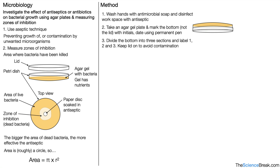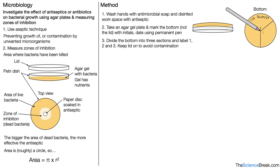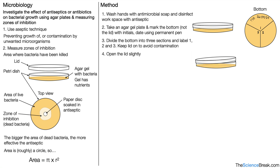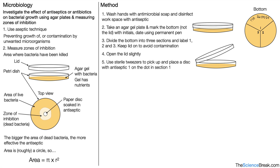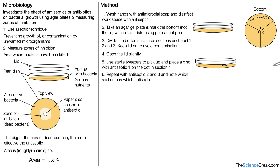We keep the lid on to avoid contamination by unwanted microorganisms. Looking at the bottom of our plate, we use a permanent marker to divide it up and label it with a date and initials, divided into three sections labelled 1, 2, and 3 because we are testing three antibiotics or disinfectants. We then turn the dish the right way up, open the lid slightly — as little as possible — and use sterile tweezers to pick up a paper disc soaked in antiseptic 1 and place it on the dot in section 1. We then close the lid as quickly as possible.